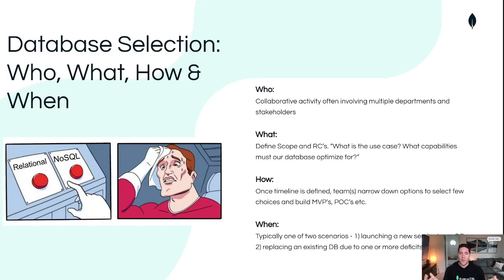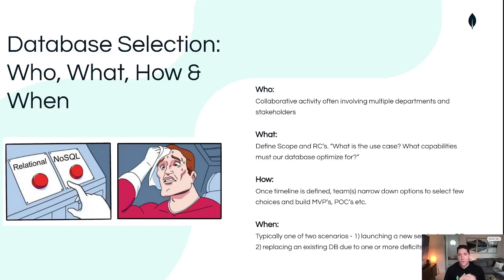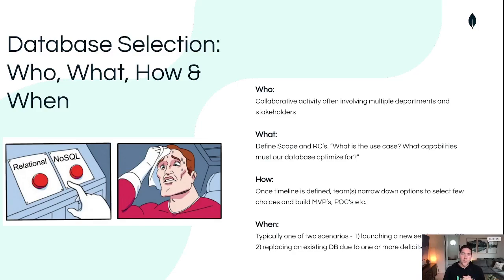So when does this happen? When are organizations and stakeholders choosing new databases? Usually, but not always, this happens in two different scenarios. One where we're launching a new app — a greenfield application that's never existed before — so we're starting from the ground up. Or this could be a situation where we're refactoring or rebuilding an existing application, maybe because our current solutions have hit scaling bottlenecks or they're just not allowing our developers to iterate as quickly as we would like, so we're going to start looking for a database with more flexibility.